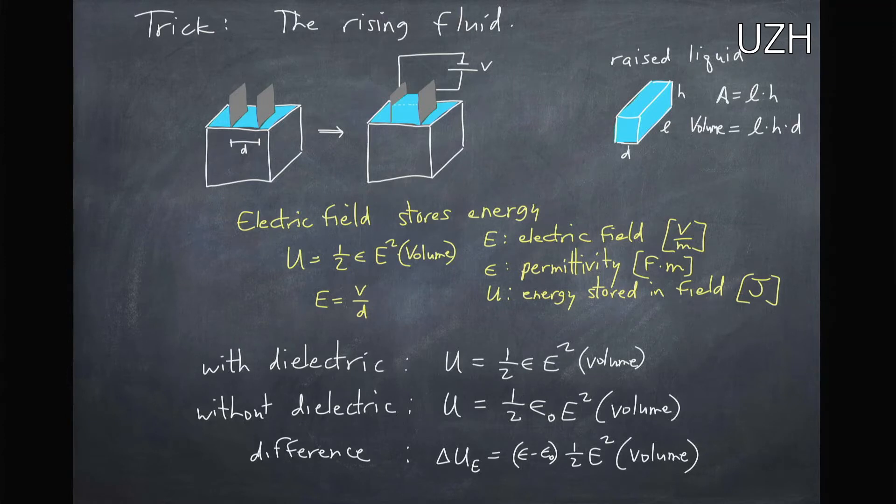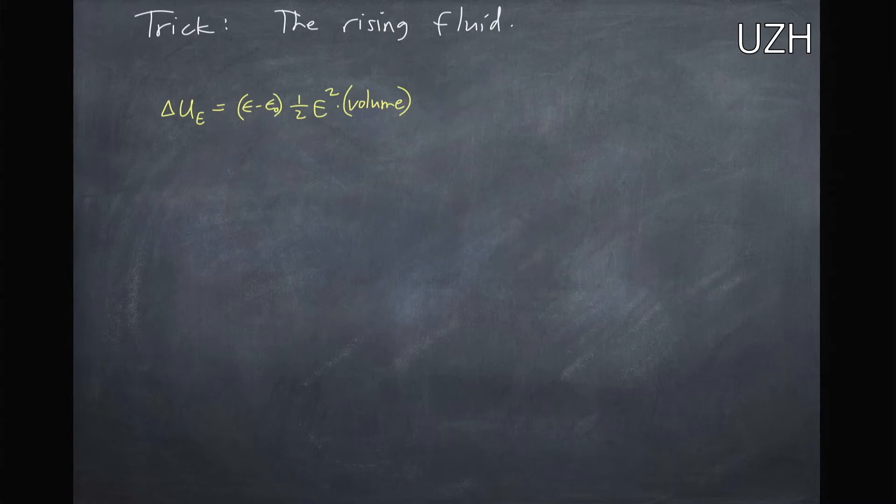So now I can take the difference between these two energies. We basically take these terms times the epsilon minus epsilon zero. I've just rewritten this equation here on this next page. The other thing we need to think about is that we've increased the energy by putting this dielectric in this volume, and this energy is the potential energy of the fluid that's going to be raised.